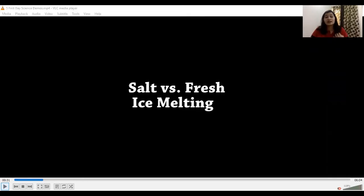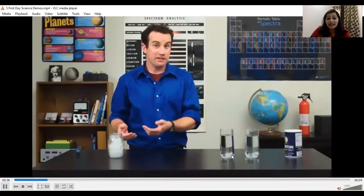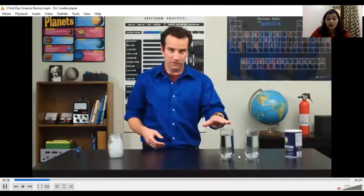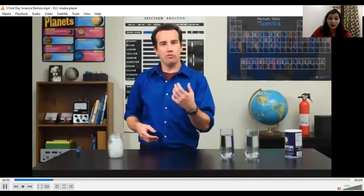The experiment is salt versus fresh ice melting. In this, we will take salt water and fresh water and we will find in which type of water ice will melt faster and why. Here you can see this man has taken two glasses of water - one is fresh water and another is salt water.